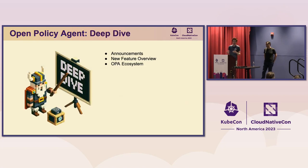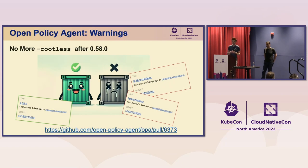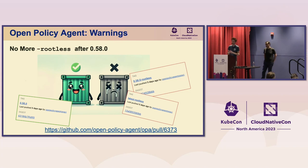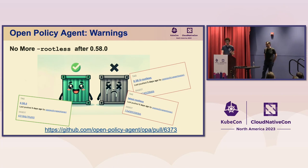I'm going to dig into some recent changes to OPA — the language and functionalities of the OPA server. First, a public service announcement: we're no longer going to be publishing the rootless flavor of OPA images. The current release is 0.58, which is the last release featuring this flavor. If you're using latest-rootless, you should switch to a versioned OPA image. All OPA images are now not using a root user, so you should feel confident to use one of the standard flavors instead.